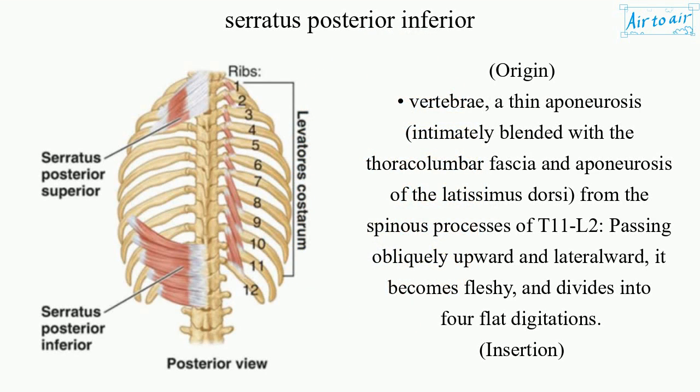Origin: A thin aponeurosis, intimately blended with the thoracolumbar fascia and aponeurosis of the latissimus dorsi, from the spinous processes of T11-L2, passing obliquely upward and lateralward, it becomes fleshy and divides into four flat digitations.